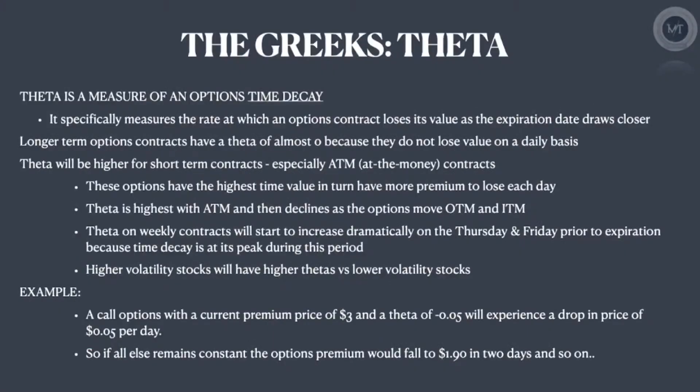Today we're discussing the relationship between outside factors and options contracts. An options contract has a premium price that can fluctuate based on multiple different things, and the Greeks are a big part of how an option's premium price is determined. The main Greeks you want to pay attention to are theta, delta, gamma, rho, and vega — and today we're going to go through theta.